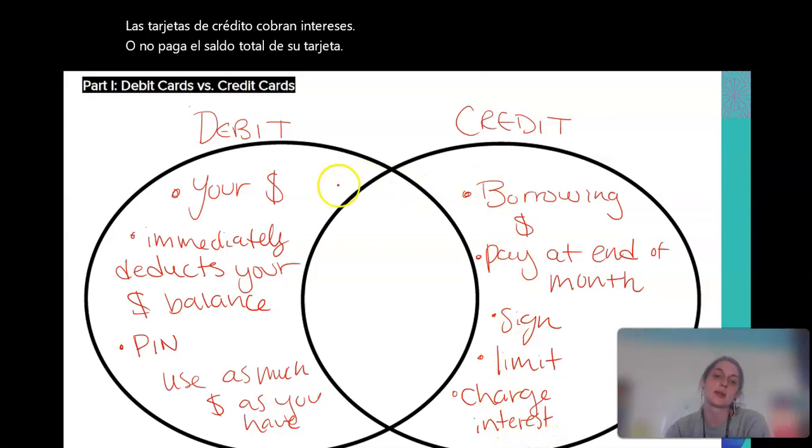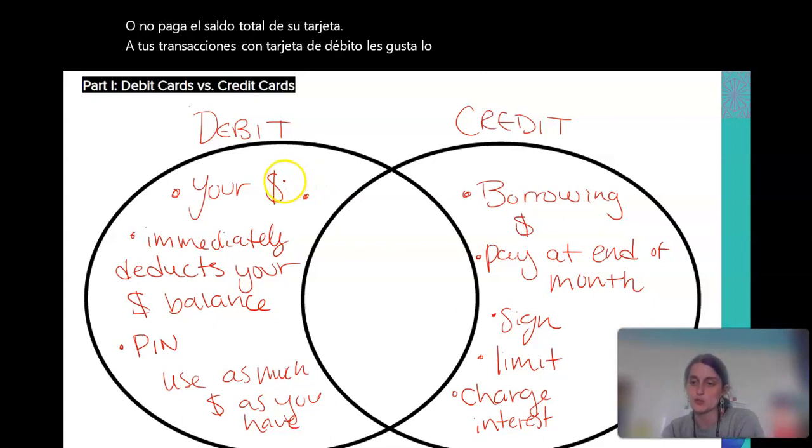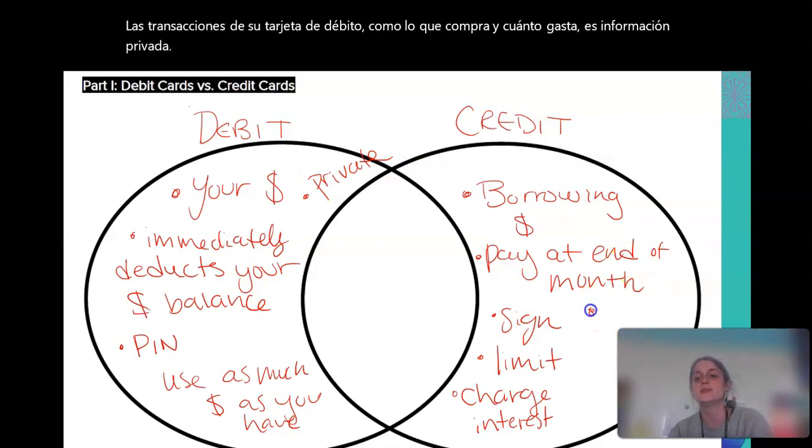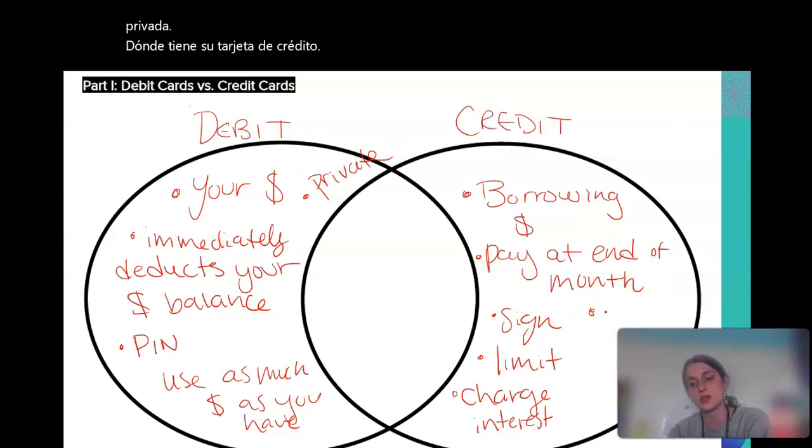Credit cards charge interest if you are late or you don't pay the full balance of your card. Your debit card transactions, like what you buy and how much you spend is kind of private information. Whereas your credit card, the money that you spend and the money that you pay back can go towards a credit score.